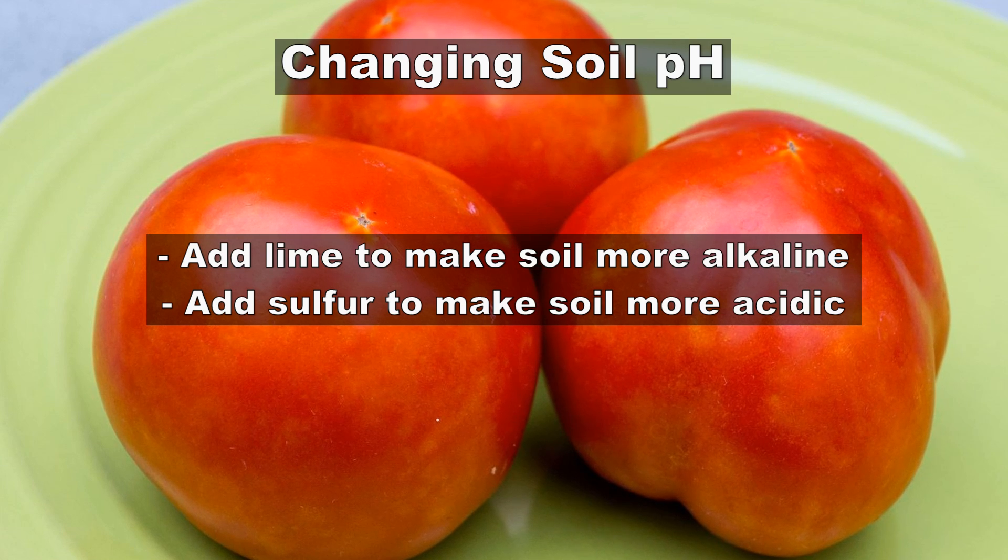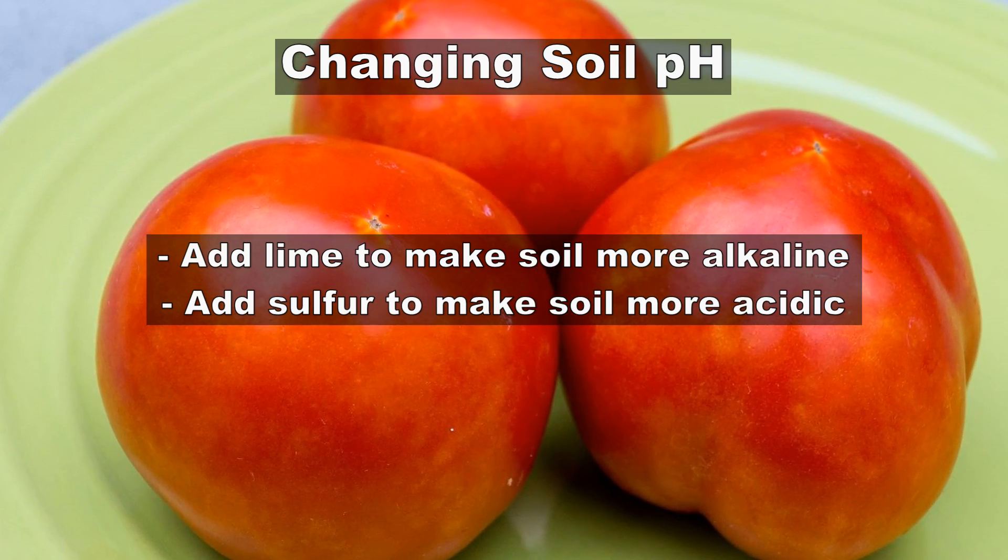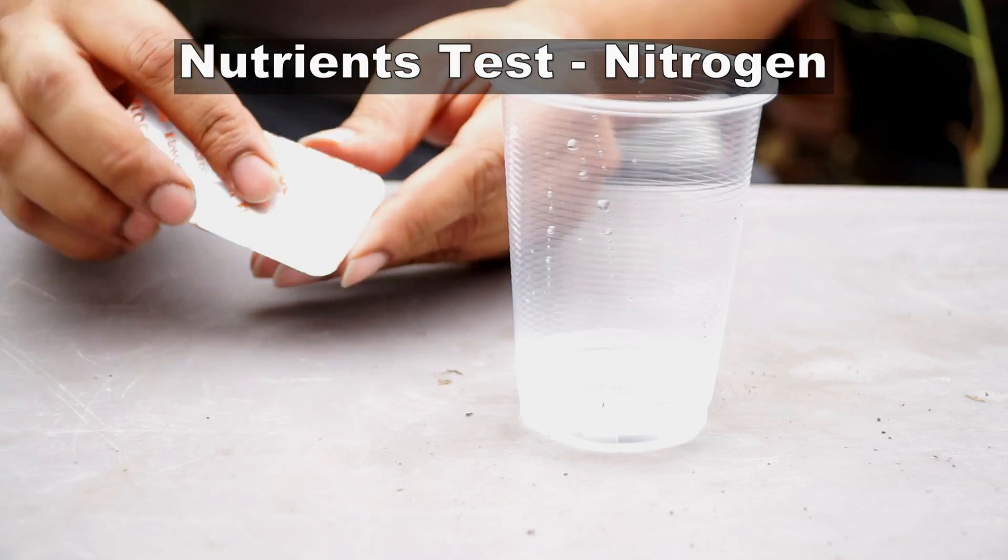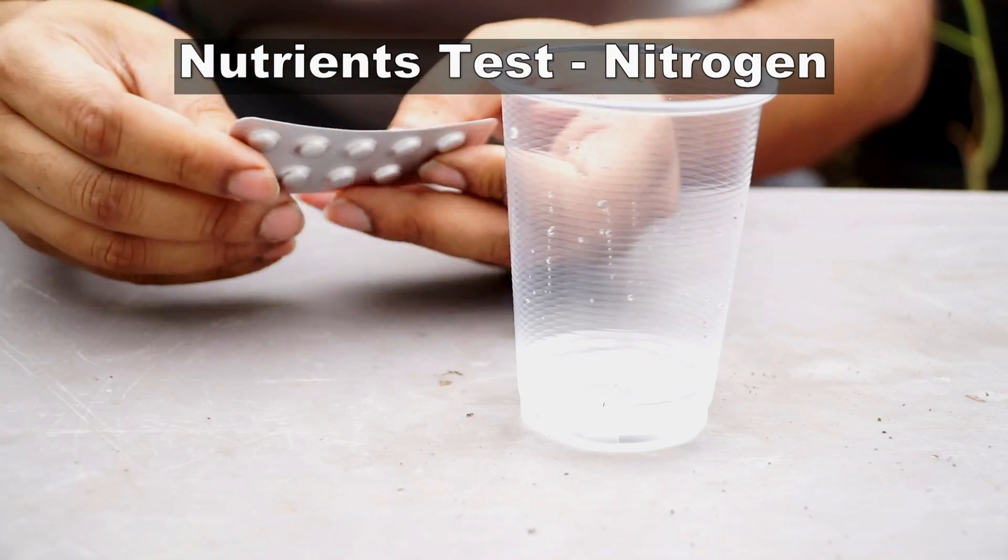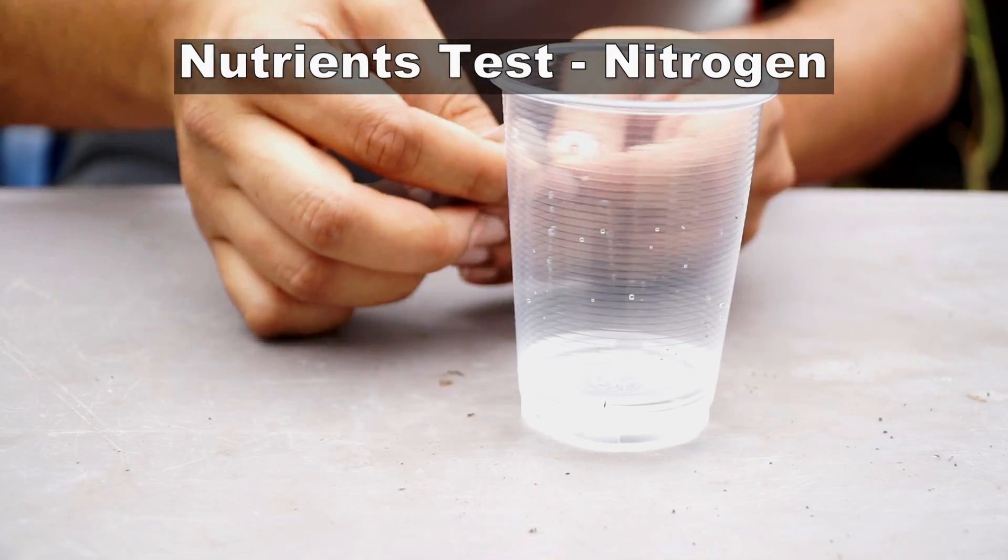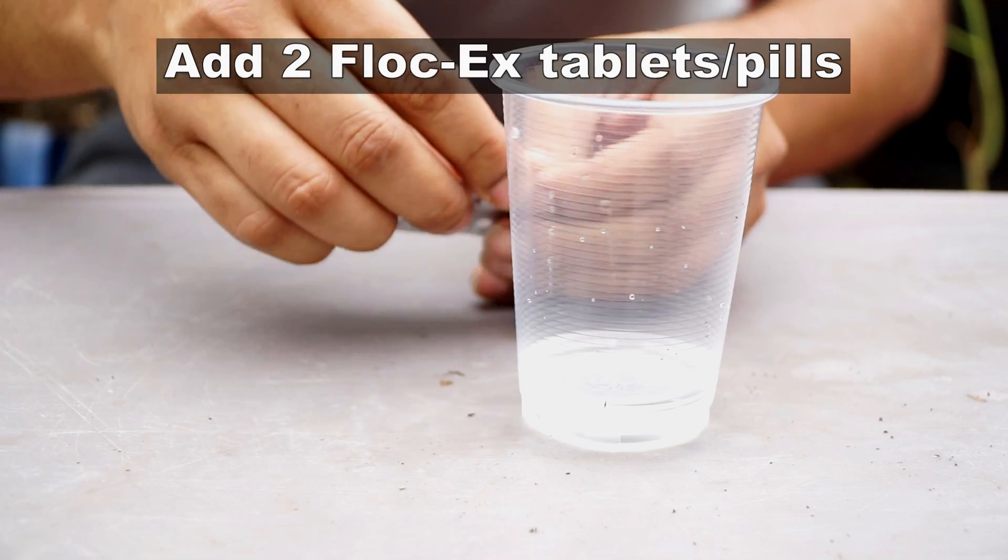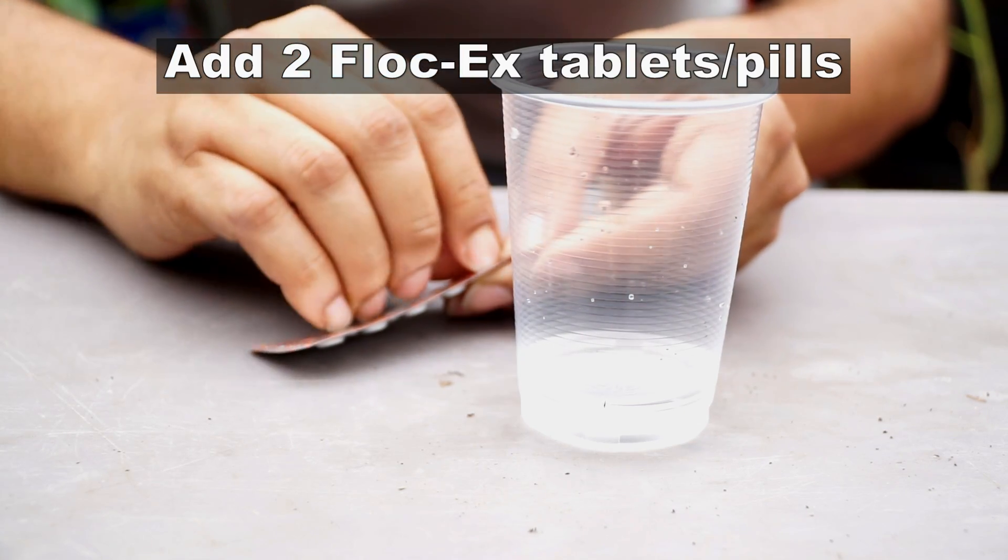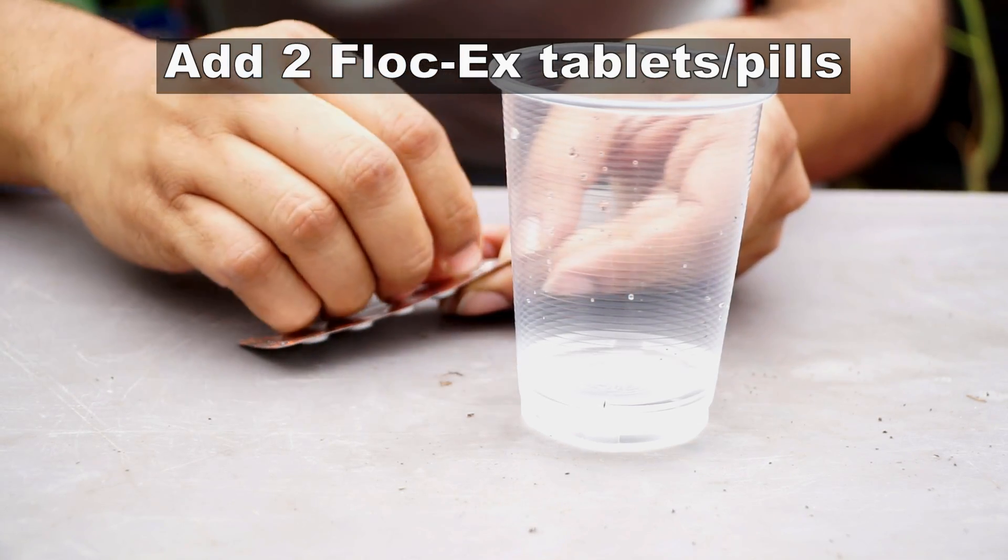Let's now jump to the nutrients test. The first nutrient we will test is nitrogen. For preparing the test solution, dissolve two flock X tablets in the water and then add the soil.